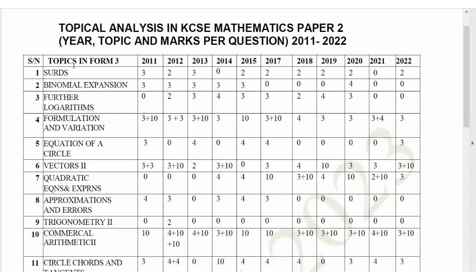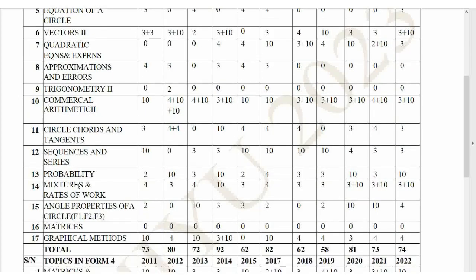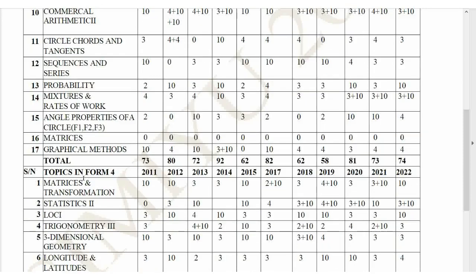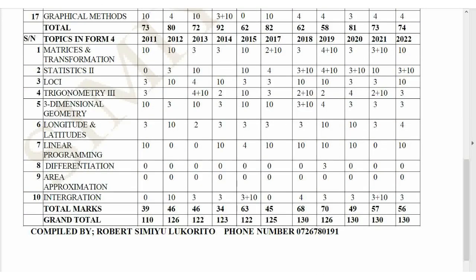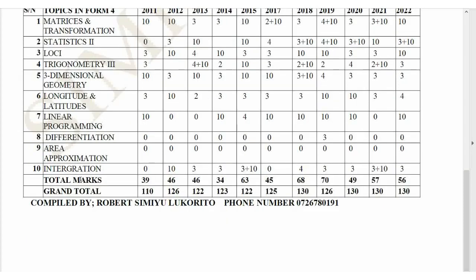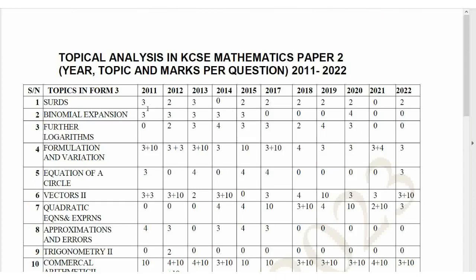Now let us look at Paper 2. Topics in Paper 2 include from Form 3: surds, binomial expansion, quadratic equations, factors, quadratic expressions, approximation and errors, trigonometry 2, and commercial arithmetic. Form 4 topics also appear in Paper 2. Let us analyze each year so you can see the trend of how it is moving.